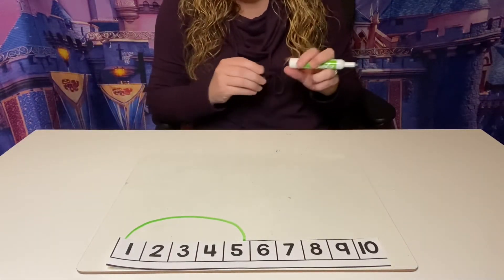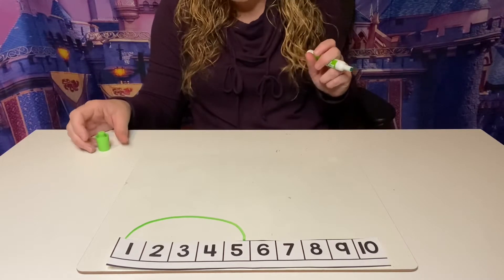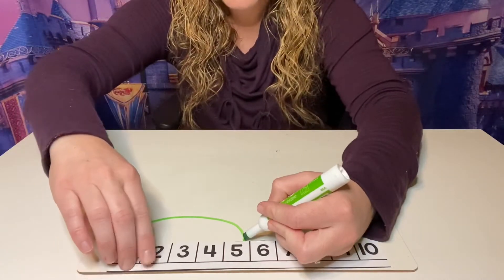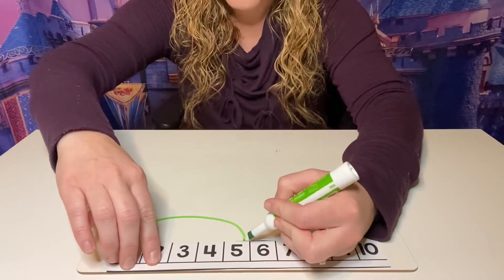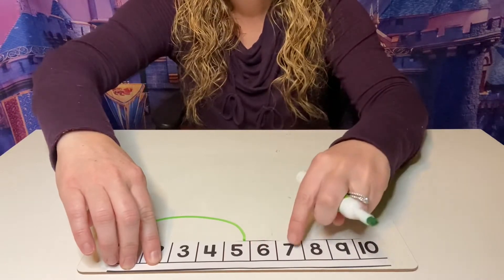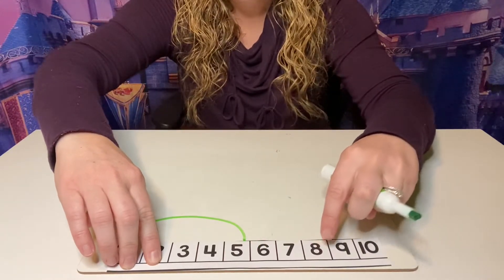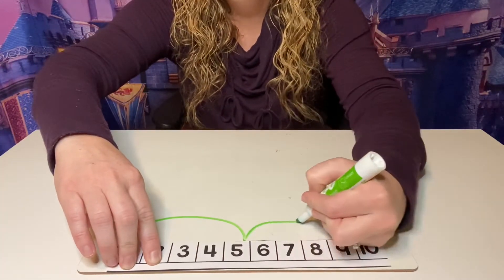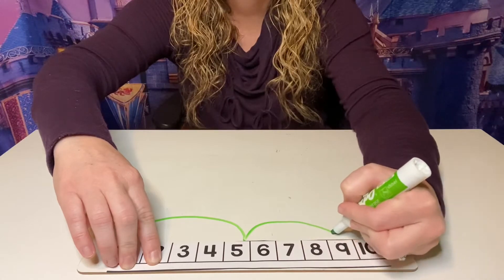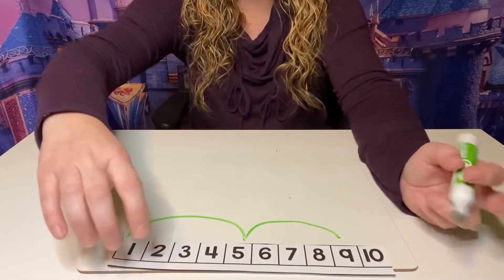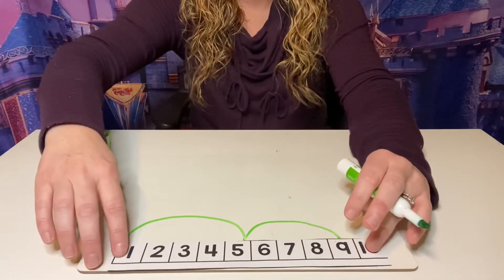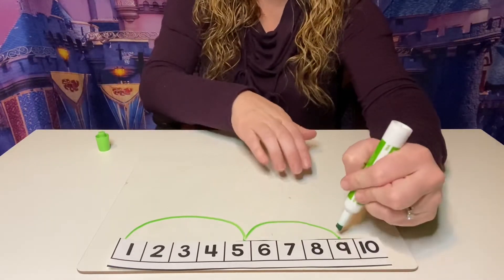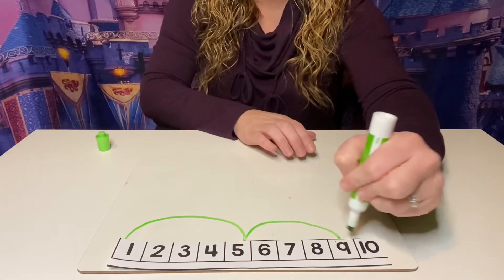Well, guess what? Then I got four more cats. So, we're going to go one, two, three, four more cats. We're going to draw a swooping line over to the nine. And that is our answer. Our answer is nine.